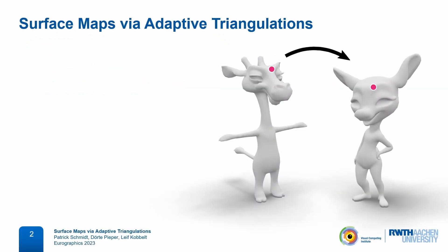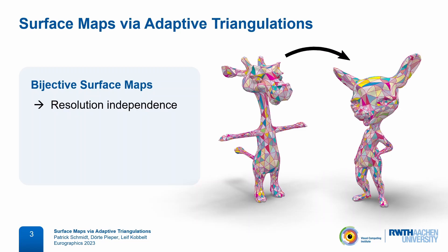In this work we present a new way to compute bijective maps between surfaces and to optimize them for low distortion. What distinguishes this work from previous ones is that we now have control over the resolution at which a map is represented, independently of the input mesh complexity. This allows us to compute maps much faster and more robustly in a coarse-to-fine manner.